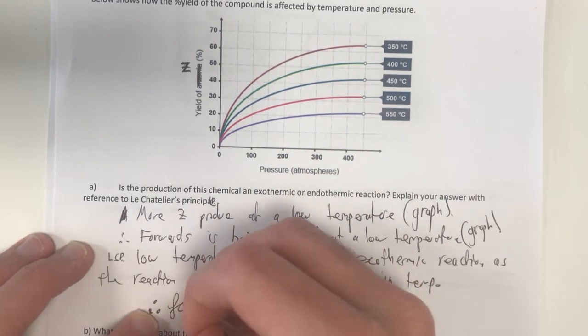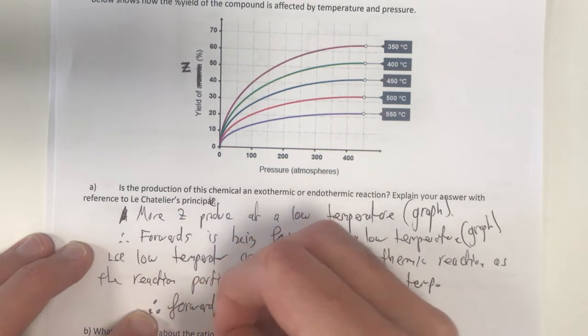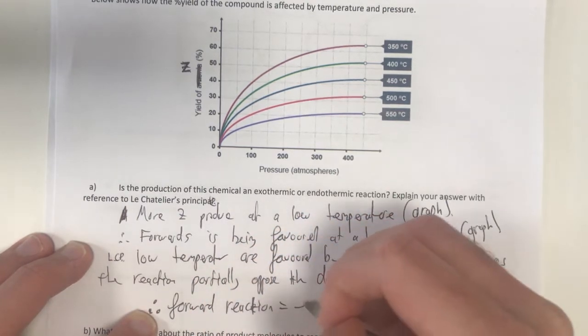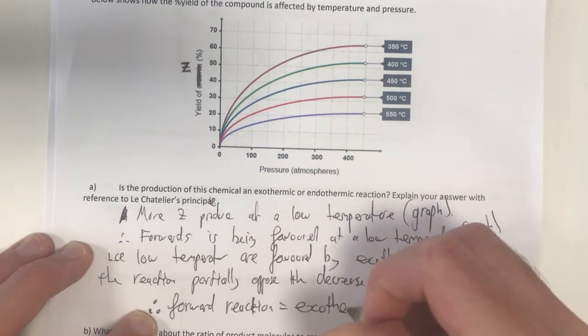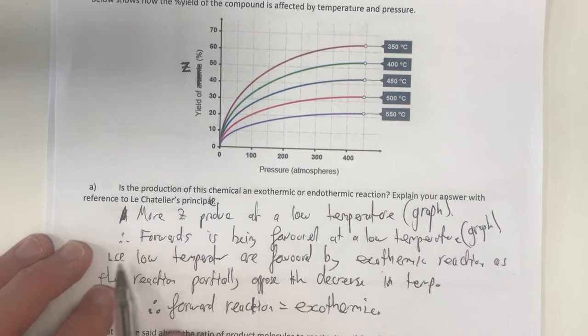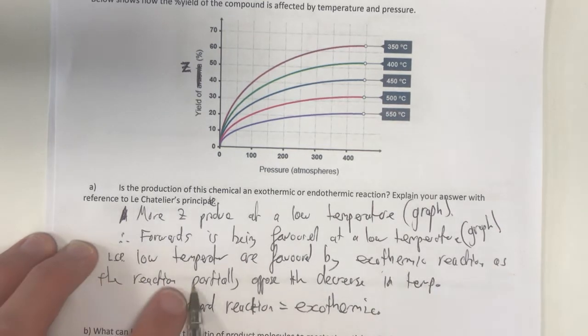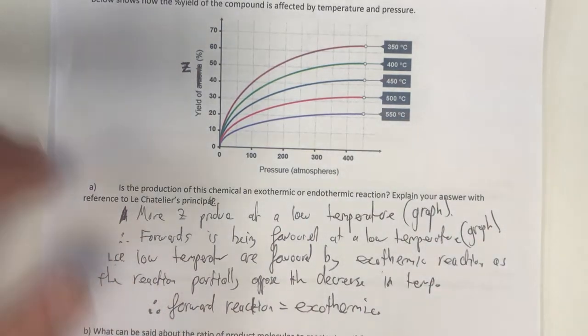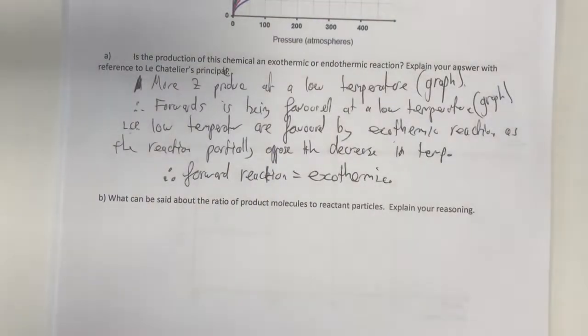So with all that information, if my low temperature is favoured by an exothermic reaction and the forward reaction is favoured at a low temperature, that means my forward reaction equals exothermic. And I've mentioned Le Chatelier's principle, low temperatures favoured by an exothermic reaction is the partially opposing. Using my graph, I can get the forward reaction is exothermic.